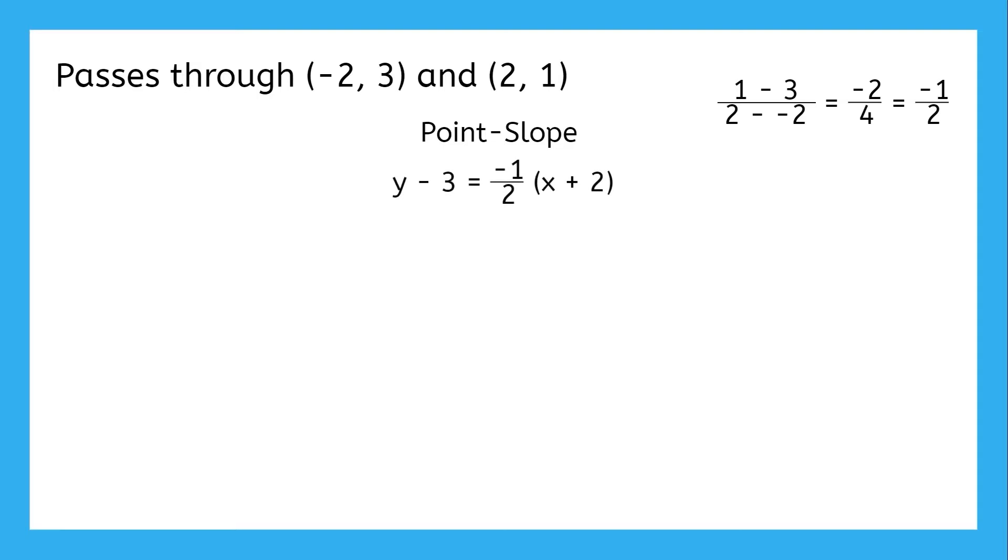Usually it's easiest to start with the form indicated by the given information. For instance, this problem gives us two points, and since neither point is an intercept, we'll use the form designed for any point on the line: point-slope form. If we calculate the slope between the points, we get negative one-half, and we can use either point for the equation. So let's just go with the first one. Here's the equation we get.